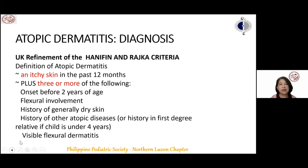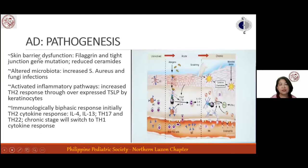For pathogenesis, there is skin barrier dysfunction with loss-of-function mutation of the filaggrin gene and tight junction gene mutations with reduction of ceramides. There is altered microbiota favoring increased Staphylococcus and fungal infections. Activated inflammatory pathways show increased TH2 responses over TH1. The immunologic response is biphasic: in acute flares the initial response is TH2 cytokine-driven, shifting to TH1 in chronic stages.